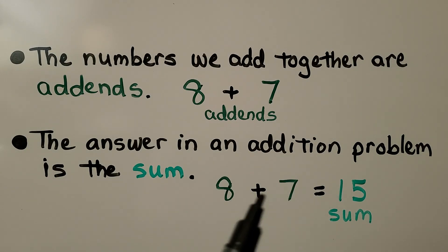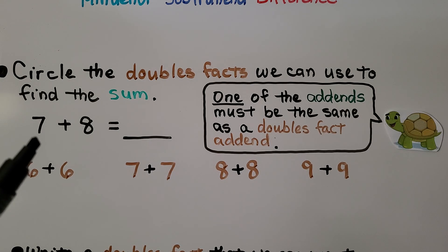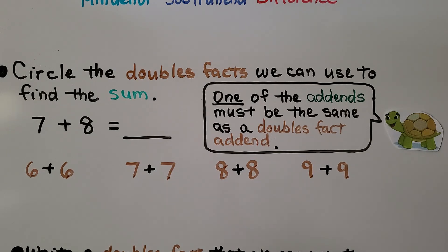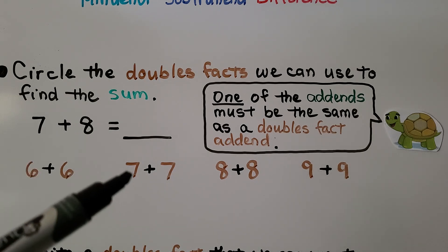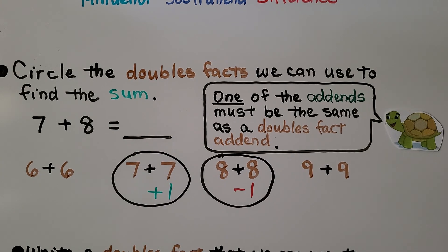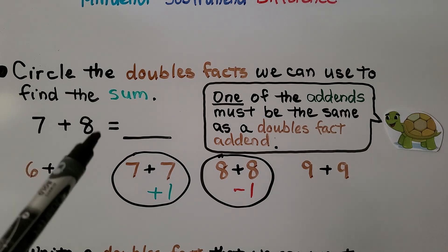Here we need to circle the doubles facts that we can use to find the sum. We have 7 plus 8. Remember, one of the addends must be the same as a doubles fact addend. We have a 7 and an 8, which means we can use 7 plus 7 or 8 plus 8. We can just look at the addends and know those are our two options.